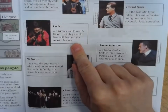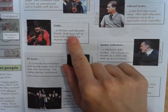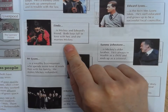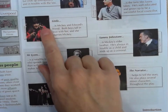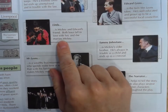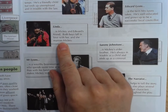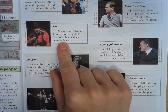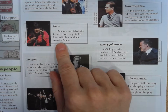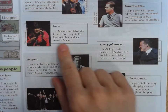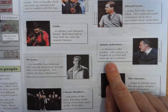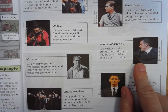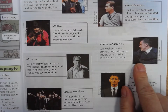Linda is Mickey and Edward's friend, and both boys fall in love with her, but she marries Mickey. We'll talk more about Linda and the opportunities she could have had at some point in the play. Sammy Johnstone is Mickey's older brother — he's always in trouble as a child and ends up as a criminal, which is arguably due to his upbringing in a working class family.